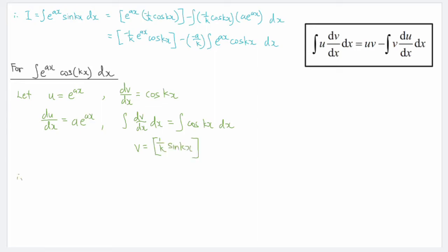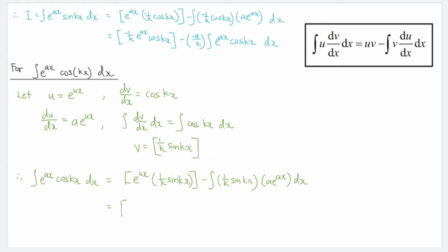Using all of this information, the integral of e to the power of ax times cos(kx) gives us u times v — that is, e to the power of ax multiplied by 1 over k times sin(kx) — minus the integral of v times du/dx, where v is 1 over k·sin(kx) and du/dx is a·e to the power of ax. Simplifying gives 1 over k times e to the power of ax times sin(kx), minus a over k multiplied by the integral of e to the power of ax times sin(kx).